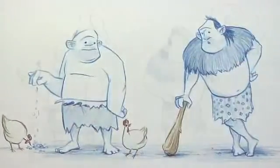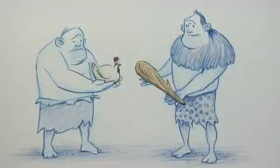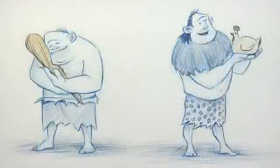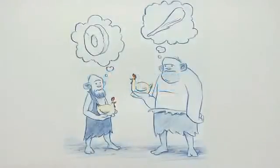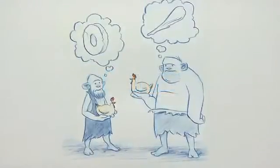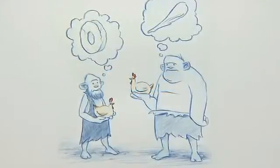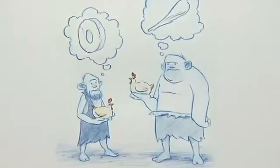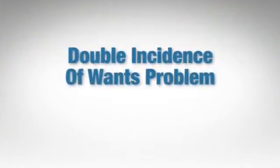Before the invention of money, people exchanged things that they produced for things that other people produced. We call this barter. Barter is very inefficient because you have to find someone who not only has what you want, but wants what you have. Economists call this the double incidence of wants problem.